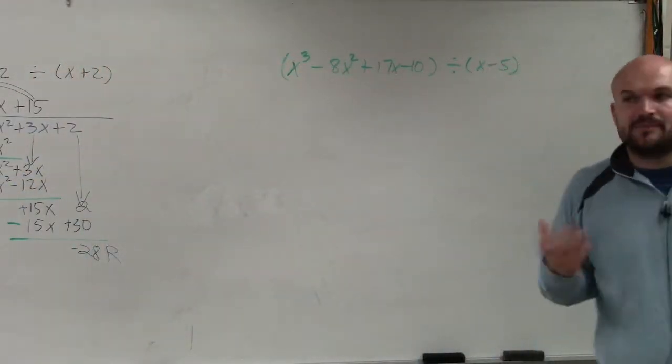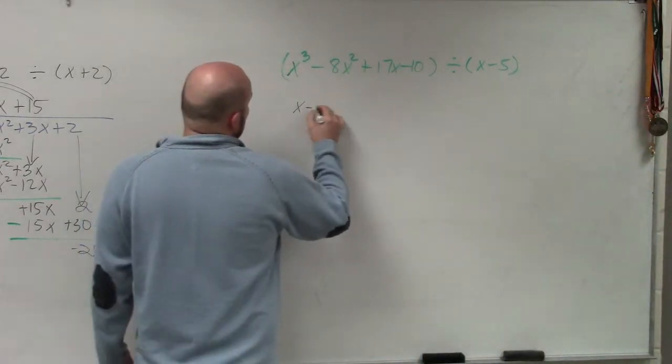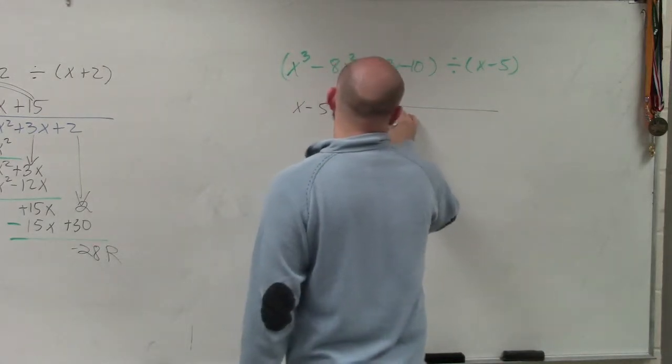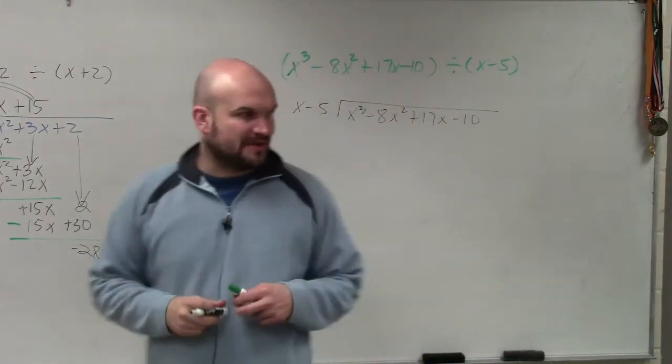So when you guys are looking at this, the main important thing that we need to do is make sure we set this up properly. So I have x minus 5 divides into x cubed minus 8x squared plus 17x minus 10. Does everybody follow me with that?